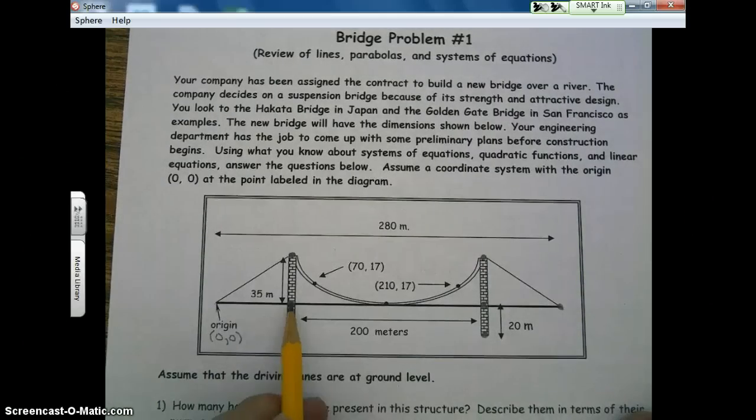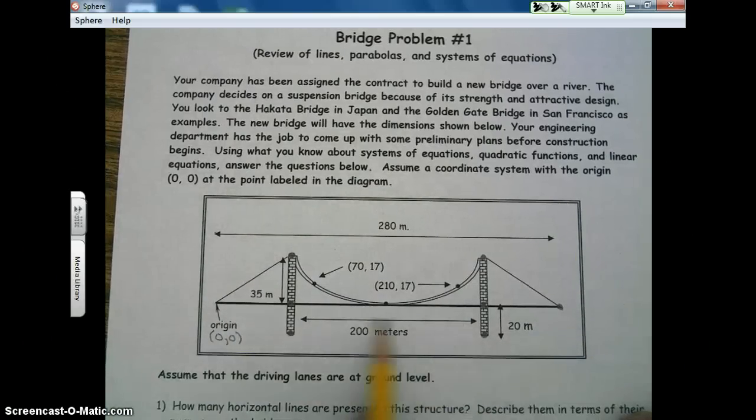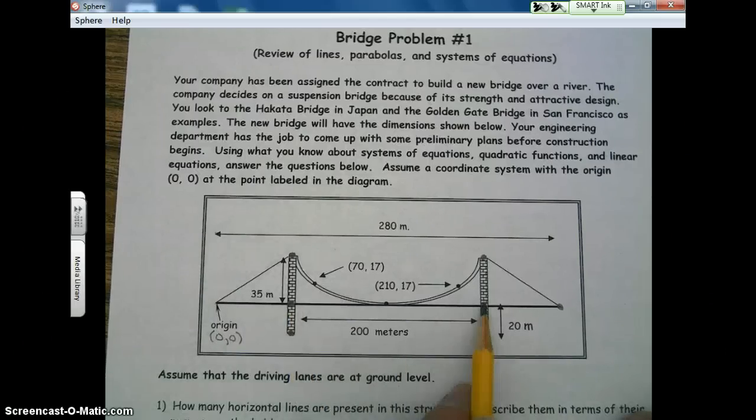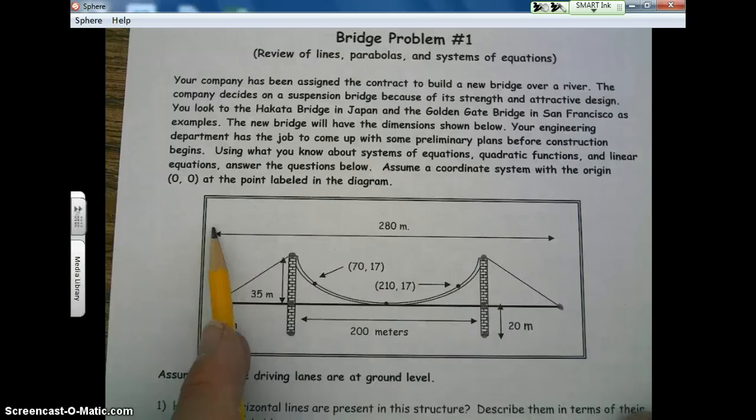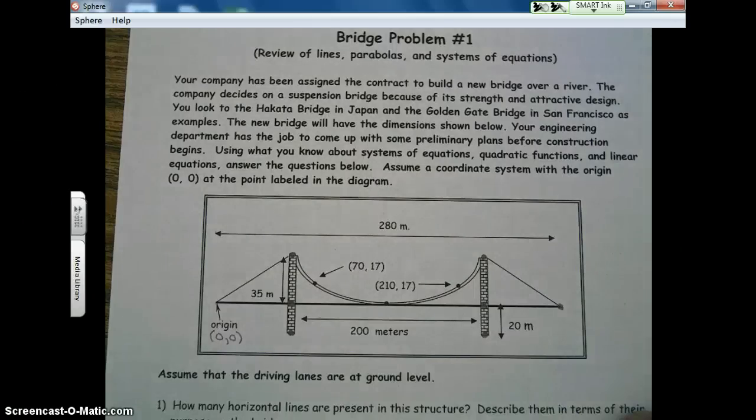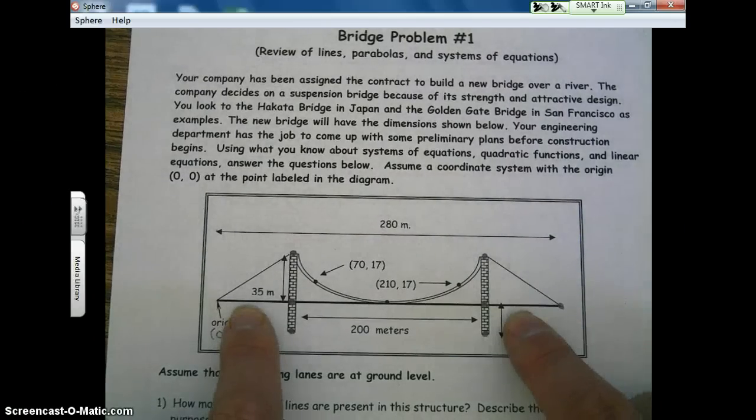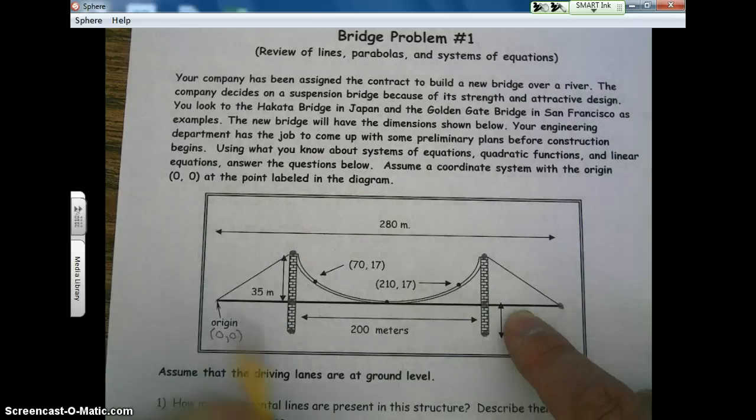So for example, let's say I want to find this coordinate here. Well, that means I need to know this distance. This line up here represents the total distance from this end of the bridge to this end of the bridge. This distance here represents the middle distance from this point to this point. So that means that we're going to take 280, subtract 200. What does that leave us with? That leaves us with 80 meters. Now, there's two sections left over. So we're going to take 80 meters divided by 2. And that's going to give us 40 on each side.